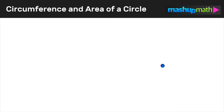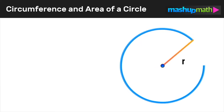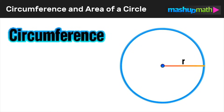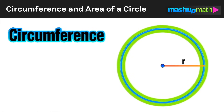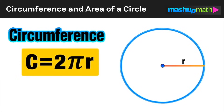Every circle has a center point and a radius that extends out to the edge of the circle. The circumference of a circle is the length of the line on the outside of the circle — it is the perimeter of the circle. The formula for finding the circumference of a circle with radius r is c equals 2 pi r, or 2 times pi times r.